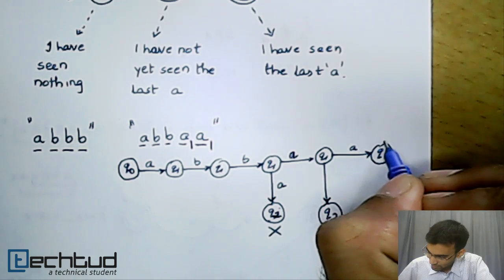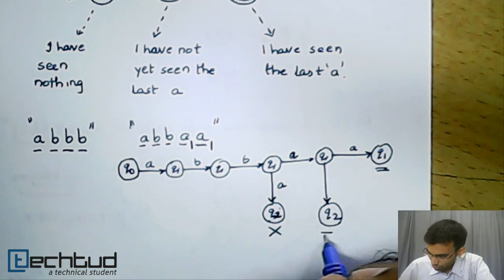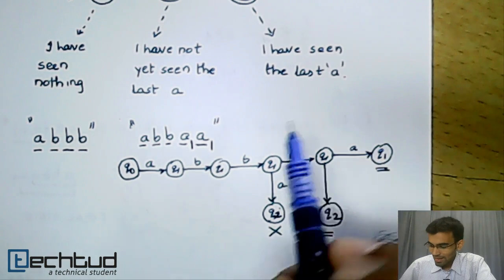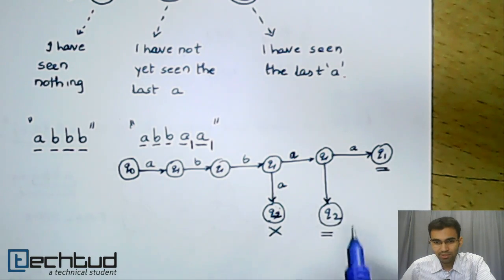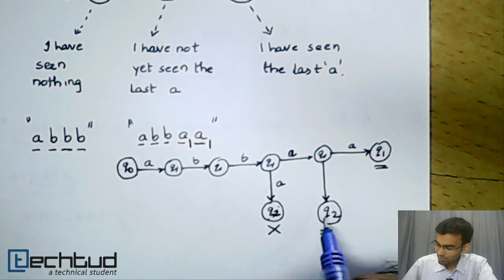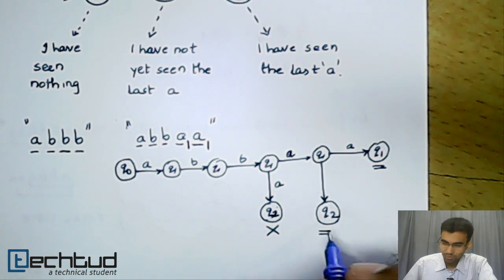At least one of the two states must be a final state for the NFA to accept the string. In this case, Q2 is a final state. Therefore, the NFA accepts.